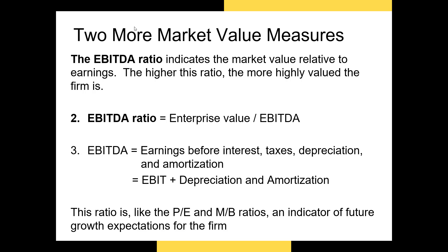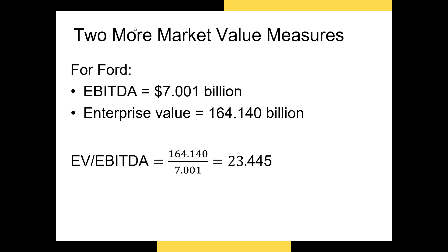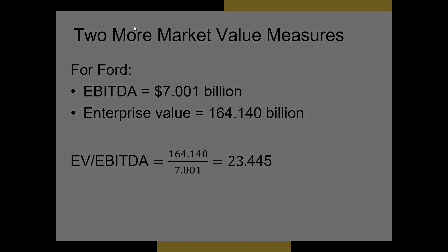In Ford's case, the EBITDA is $7.001 billion and our enterprise value is 164.14 billion, so our EBITDA ratio is 23.445. This is important because if we wanted to compare Ford to GM or another automobile manufacturer and Ford's EBITDA ratio was far lower than its direct competitors, this might indicate Ford is less highly valued than those competitors. In other words, we might be able to buy Ford and realize a much higher return than purchasing shares of GM, if GM's EBITDA ratio was, say, 30 or 35.